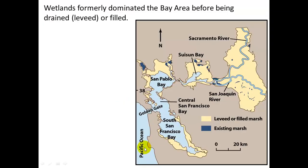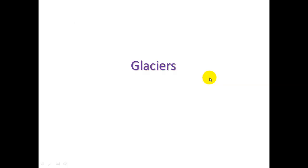The Bay Area used to be heavily dominated by wetlands. You can see here the Sacramento River, which goes up north to the Mount Shasta area along Route 5 — these are all low-lying, swampy areas. Everything shown in yellow has been levied or filled in, though we still have some existing marshes around here.